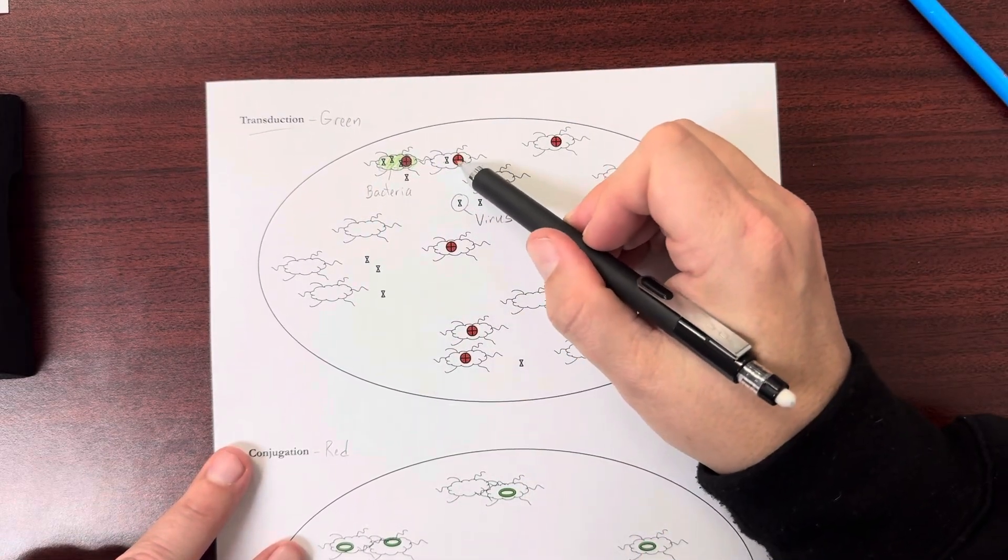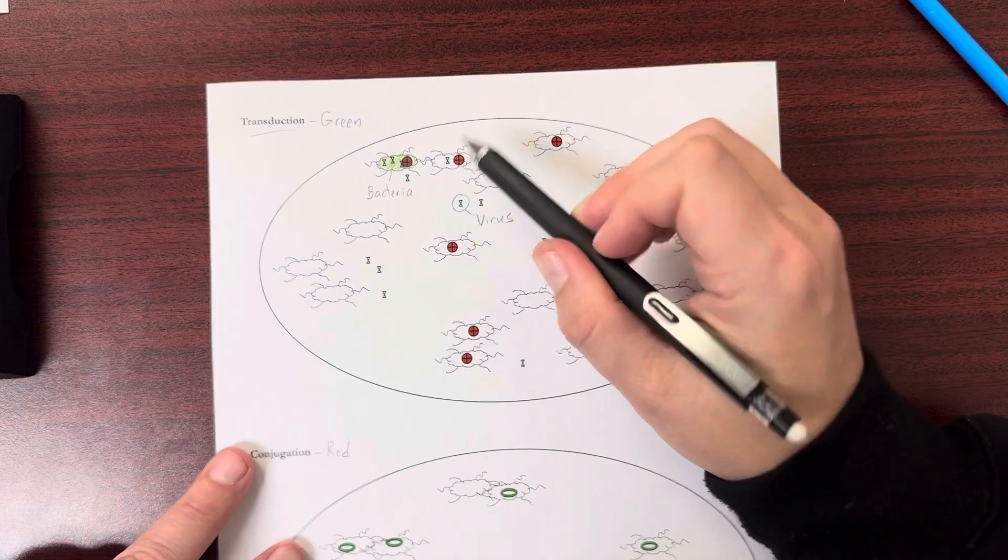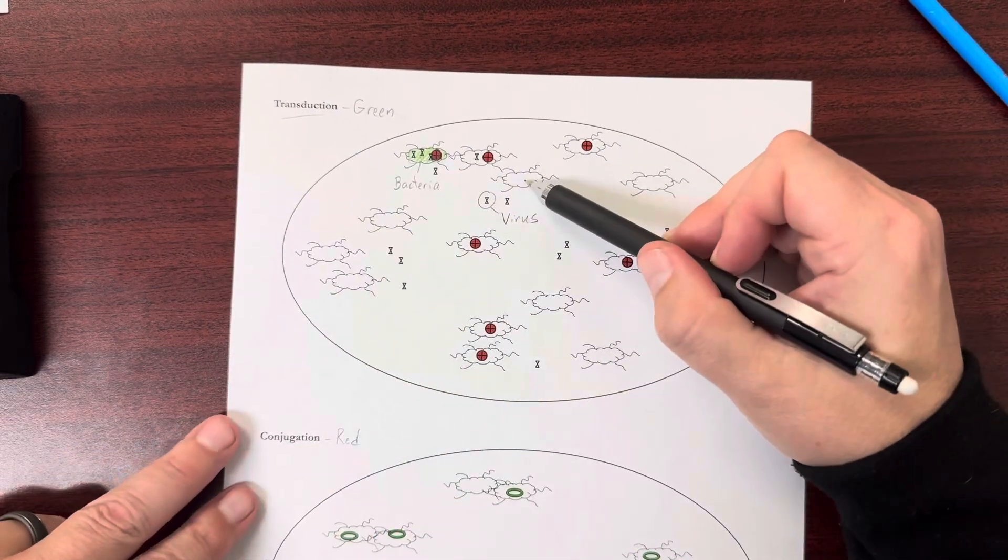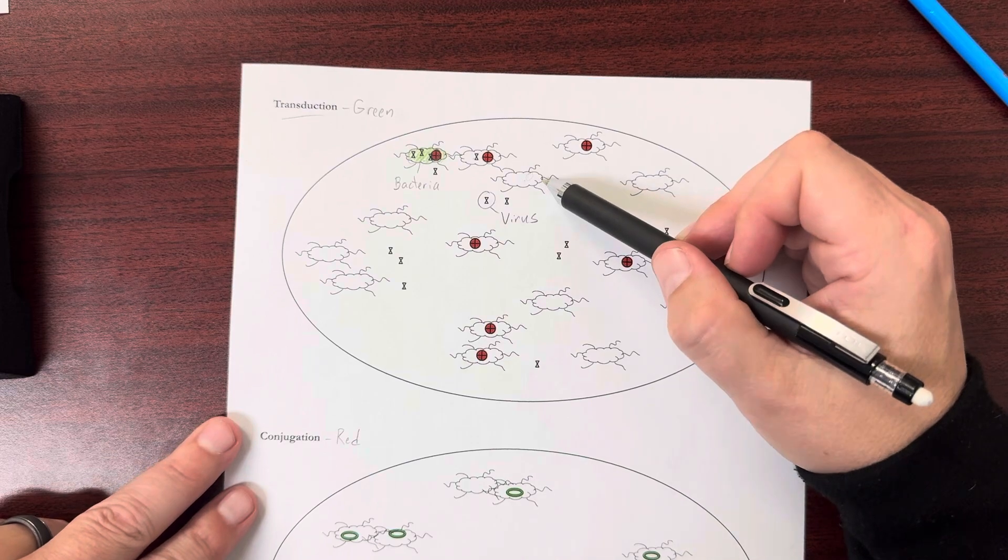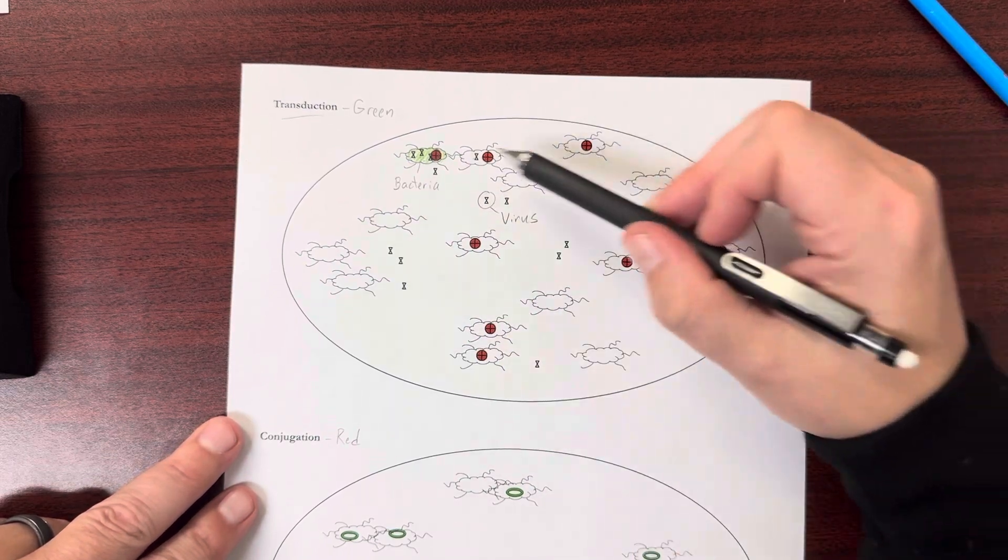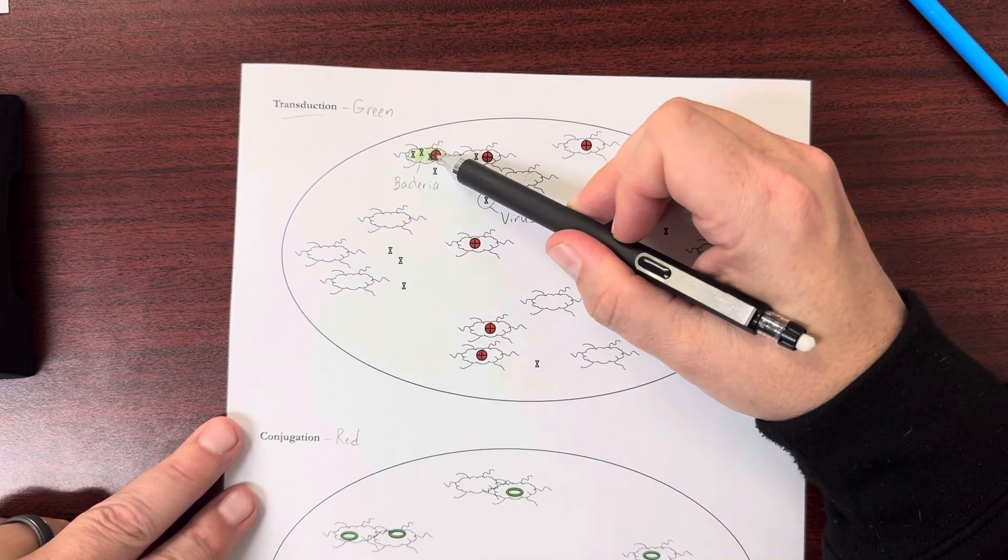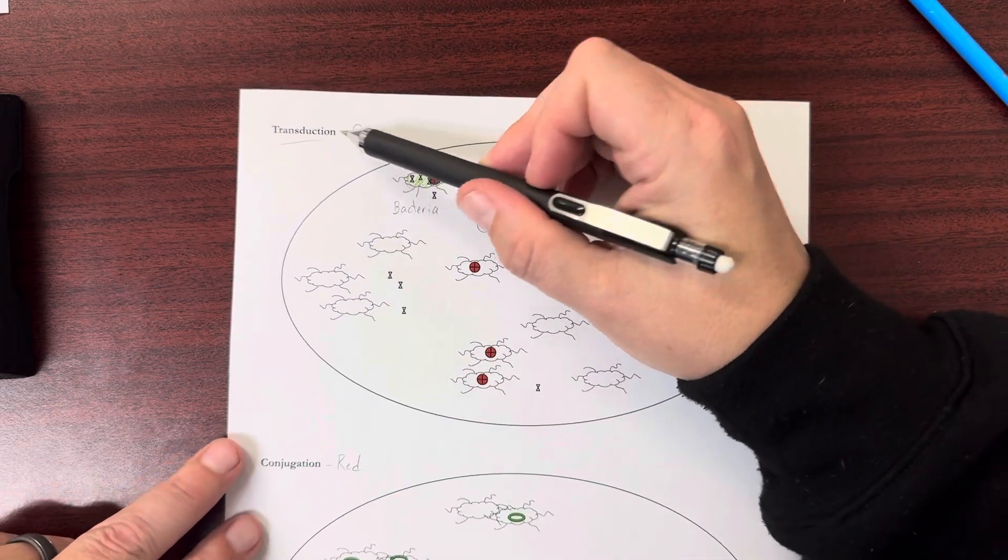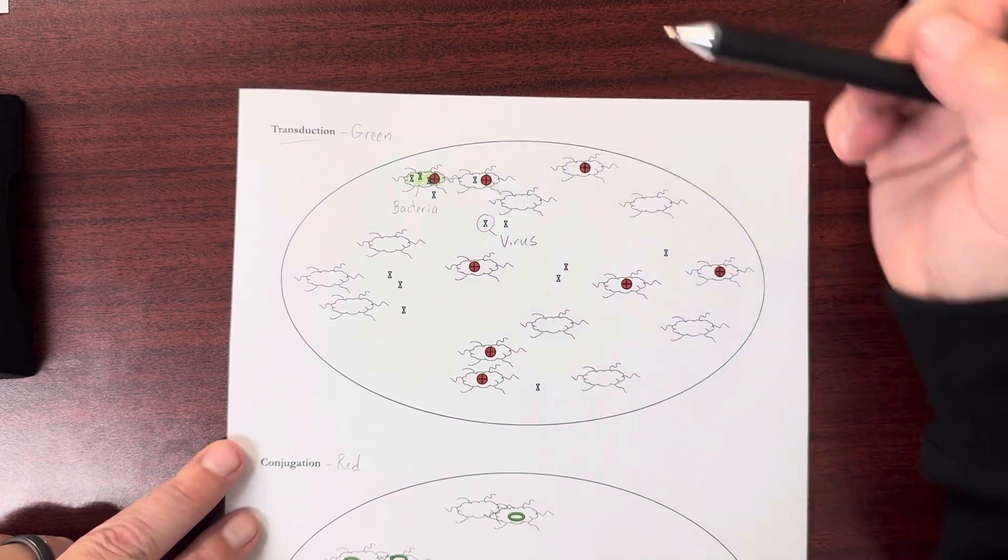So this one here is also producing that protein. So we shade that one in green. This one doesn't have the protein. We don't shade that one in. Just shade in the ones that are producing the protein, where they got the DNA from the virus to make it.